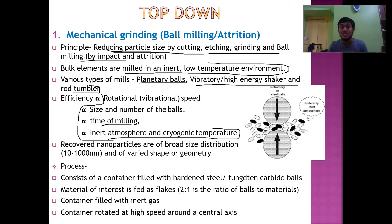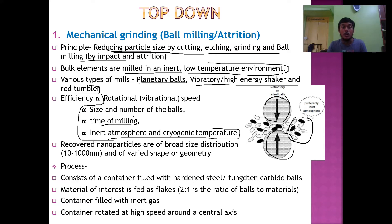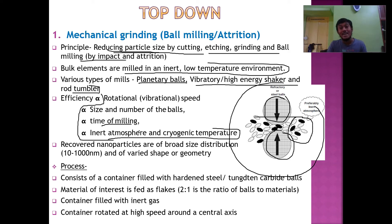The steel balls revolve and the particles are grabbed or thrown into the gap between two steel balls, where they get crushed. Larger size and greater number of balls increases efficiency, and time of milling is also reduced accordingly. The process is carried out in an inert atmosphere and at cryogenic temperature, both of which are important factors for efficiency.